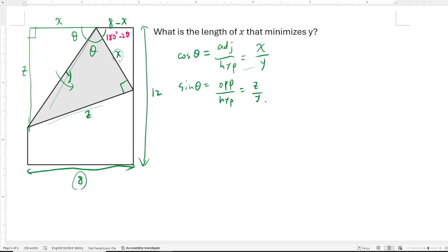Since the relationship between x and 8 minus x is cosine of this angle, we can say that the cosine of 180 degrees minus 2 theta is adjacent, which is 8 minus x, over x, which is the hypotenuse.